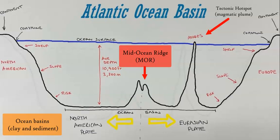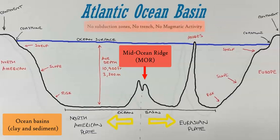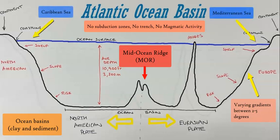There are other islands as well, but along this profile between North America and Europe, we have the Azores after the mid-ocean ridge before you reach the European coastline. These are passive margins with no activity — no subduction zones, no trenches. You have different gradients of rises and slopes up to the shelf, where the ocean connects and touches the continents. The Mediterranean is to the east and the Caribbean is to the west as the marginal seas.